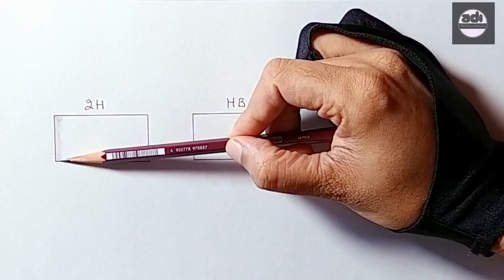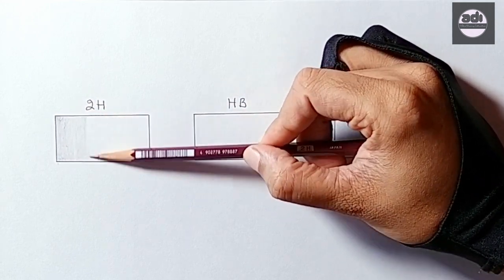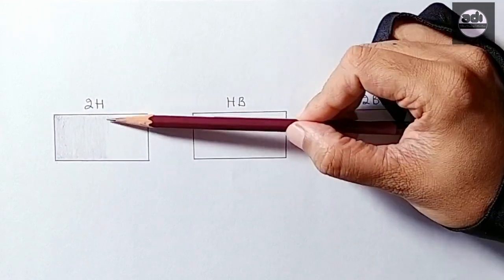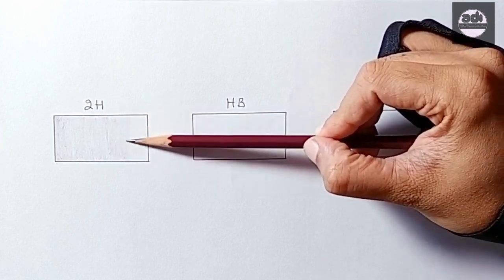For your assignment, you will shade one rectangle every day and shade it using the shoulder or side of your pencil lead. You want to get a rectangle with even tone.